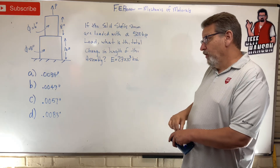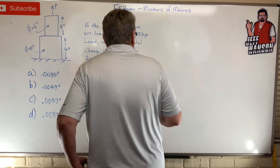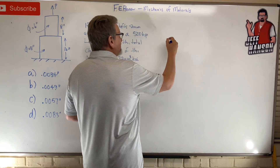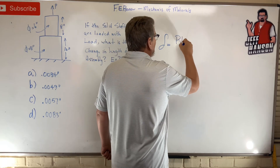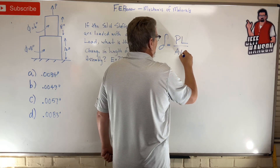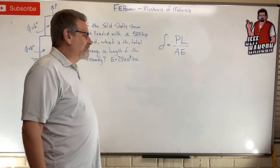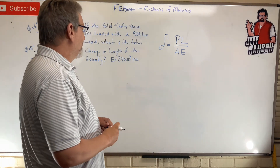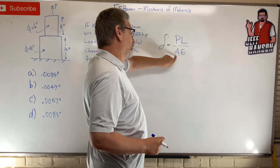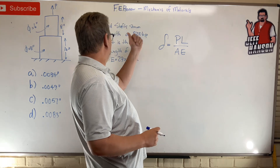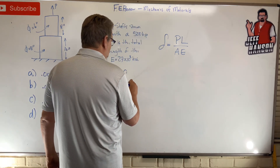Alright, the key equation on this problem is delta — change in length — equals PL over AE, the classic equation. We know the lengths of the segments, we know P the applied force, we know the cross-sectional area, and E is given.